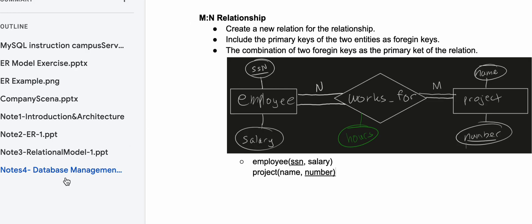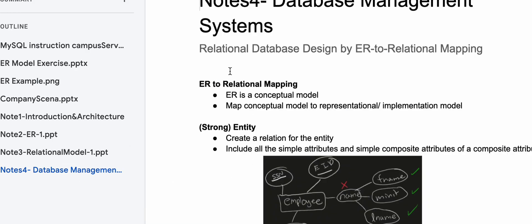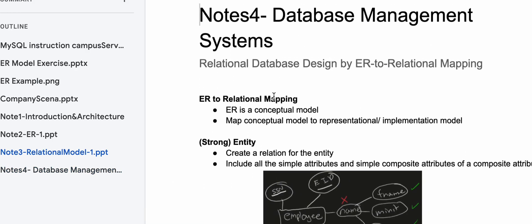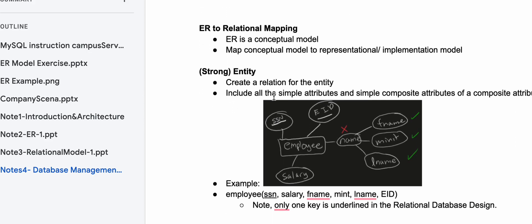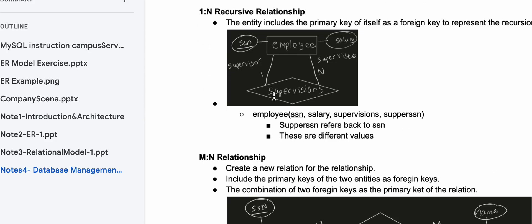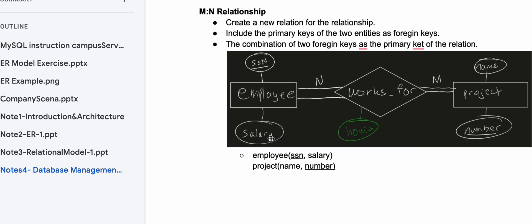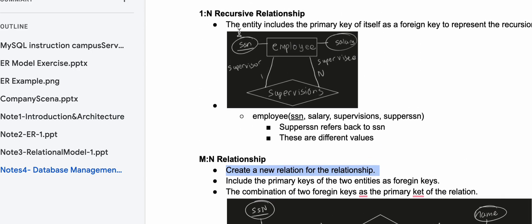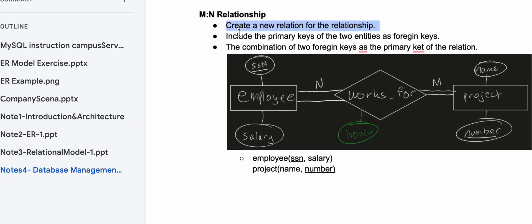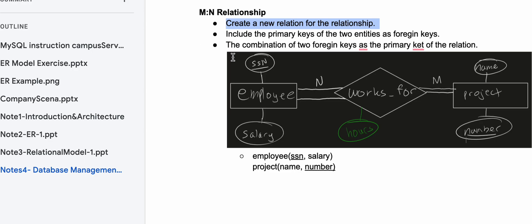Many-to-many relationship — this is our continuous study of database management systems where we take relational database design and put it into our ER-to-relational mapping. Looking at our many-to-many relationship, we need to create a new relationship for it. Previously we've only dealt with two: one-to-many and one-to-one, but now we're looking at many-to-many and we're going to have three inside of here.